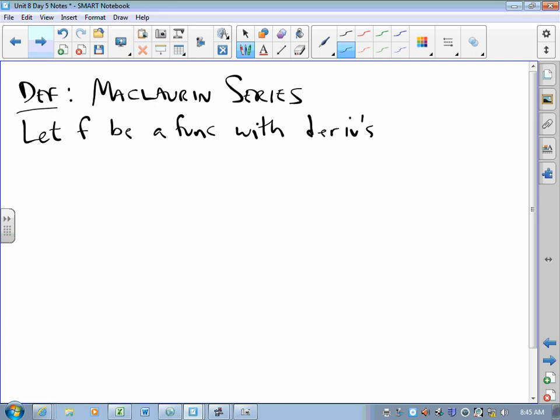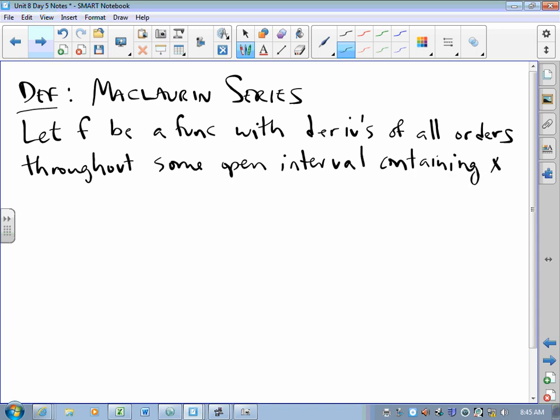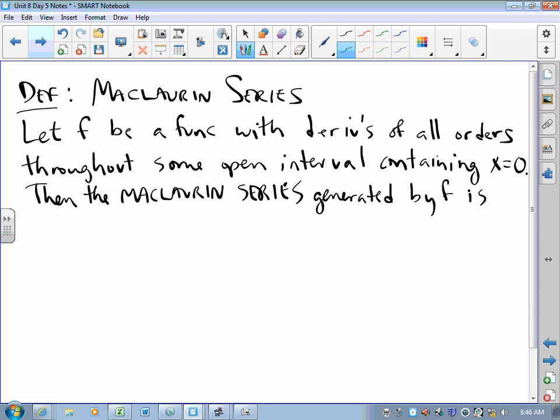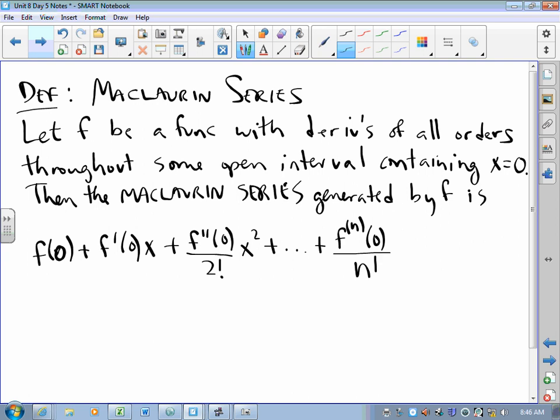What do I mean by derivatives of all orders? It means that if I want to find the three millionth derivative, I can do it throughout some open interval containing zero. Then the Maclaurin series generated by f is f(0) + f'(0)x + f''(0)/2! x² and so on, such that the nth term is the nth derivative evaluated at zero over n factorial times x to the n.